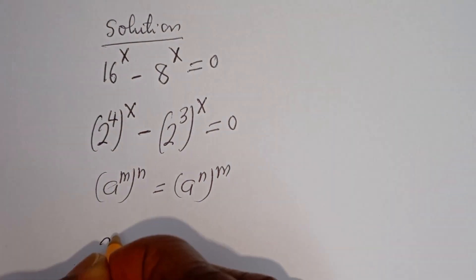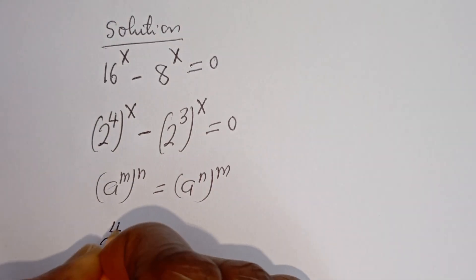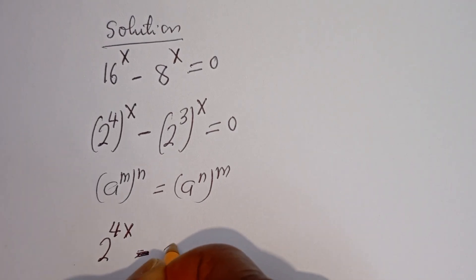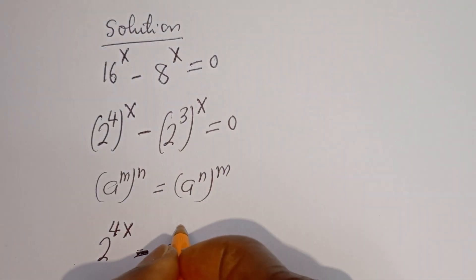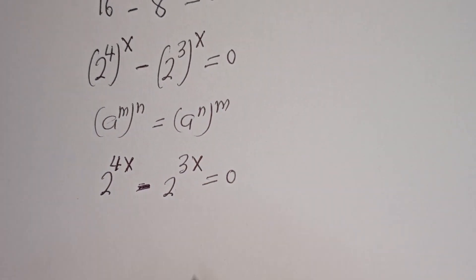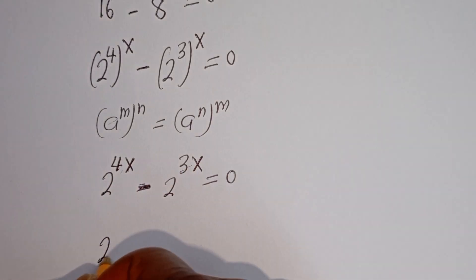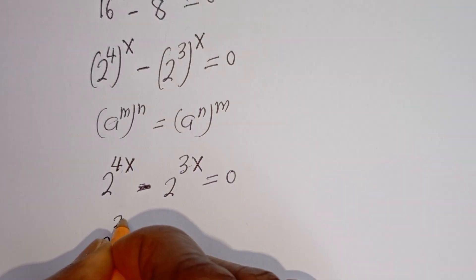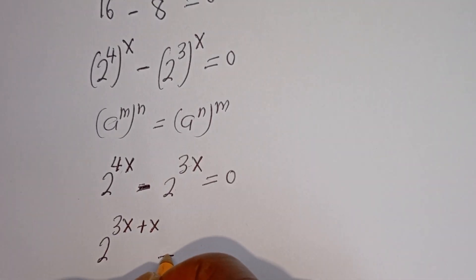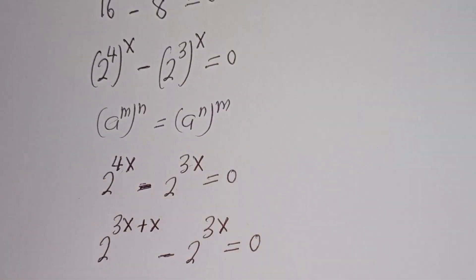Then this is 2 to the power of 4 times x, minus 2 to the power of 3 times x, is equal to zero. Now, here we have 2 to the power of 3x. This can be written as 2 to the power of 3x plus x, minus 2 to the power of 3x, is equal to zero.